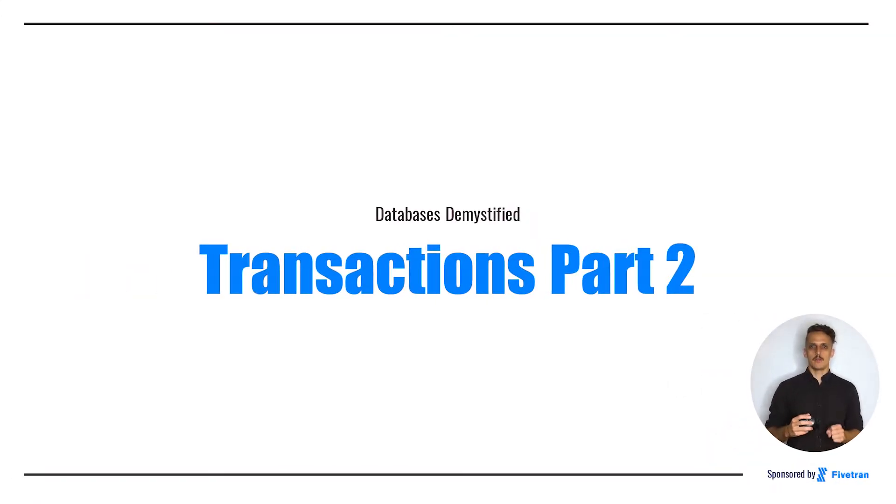Today is the second part of a two-part series on transactions. If you haven't watched Transactions Part 1, definitely go back and watch that first. Otherwise, you'll be missing some important context and vocabulary for this lesson. We're going to be continuing our discussion of transactions by covering two very important topics for understanding database performance: locks and isolation levels.